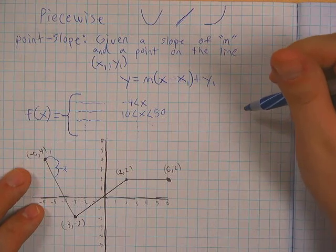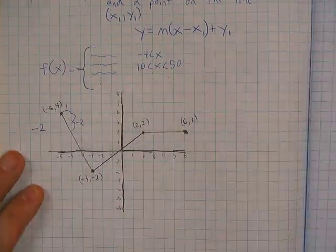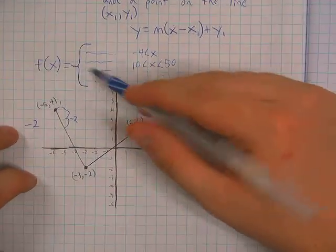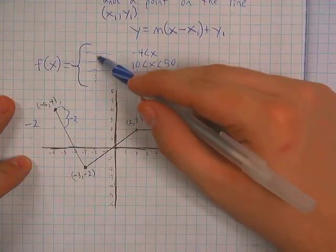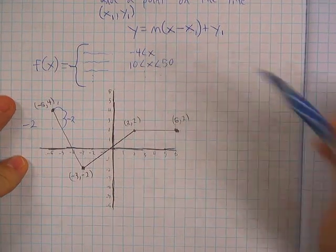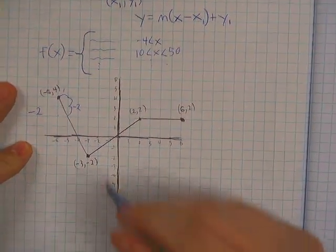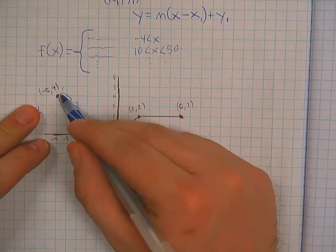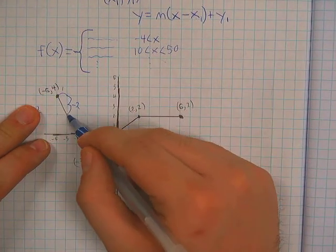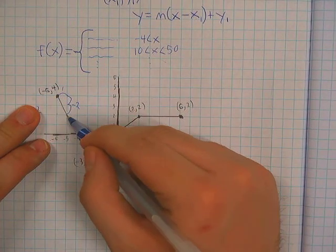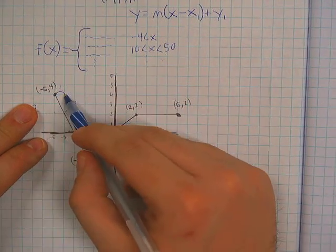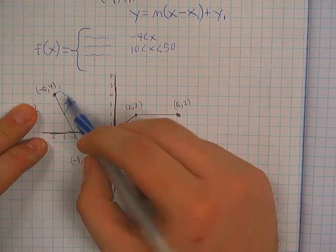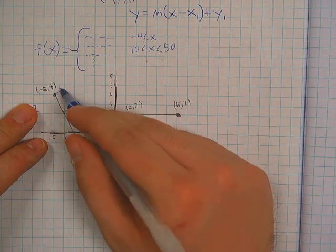The example we'll look at today has three different pieces, which means our piecewise function will have three equations and three domains. The first thing I need for point-slope form is a slope. From one point to the next I go over one and down two, so that's a rise of negative two and a run of one.